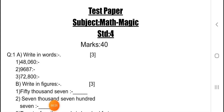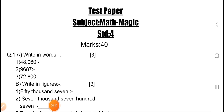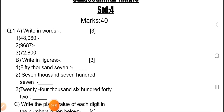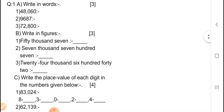Marks is 40. Question number 1, A — write in words, 3 marks. First question: 48,016 — you have to write down in words. Second question: 9,687. Third one: 72,800.